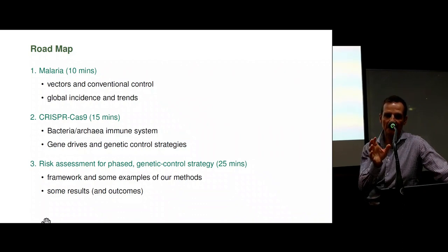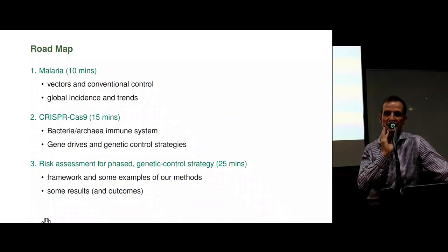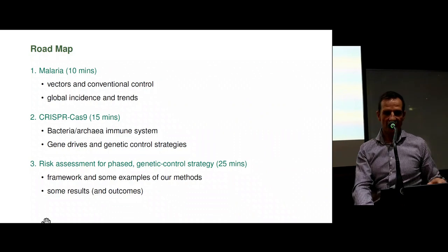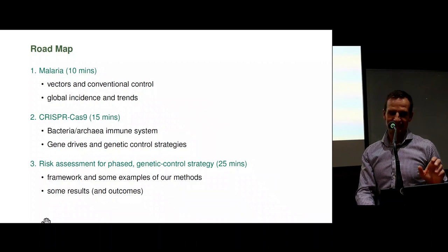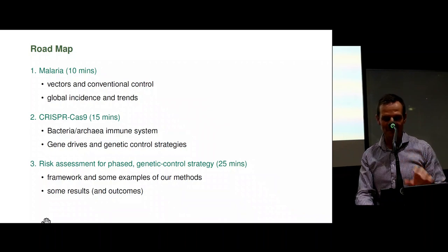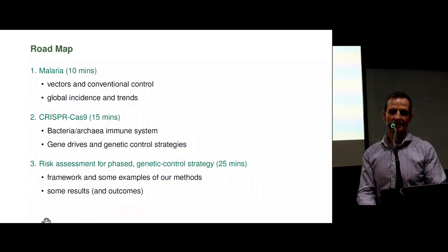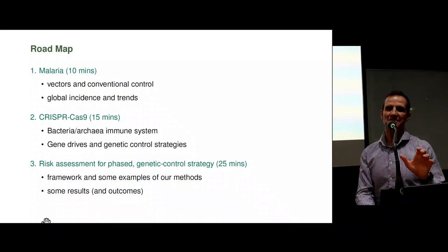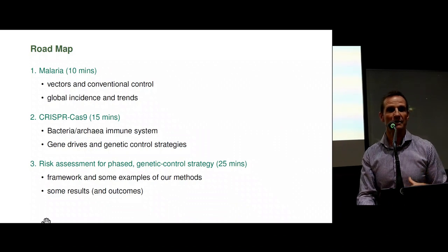I'm going to talk a little bit about malaria, a little bit about a system called CRISPR-Cas9, and then start talking about risk assessment for phased genetic control strategies in Africa. I'm going to try and keep the malaria bit down to five minutes, spend about 15 to 20 minutes on CRISPR-Cas9, and then whatever time's left, talk about the risk assessment work. It's important that you understand the CRISPR-Cas9 genetics so you understand what's being done, what's being proposed, and how we're trying to address it.